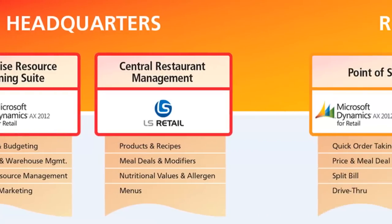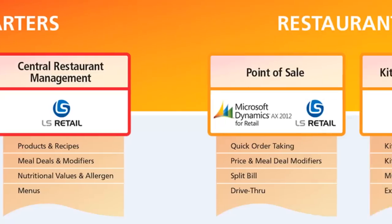The central restaurant management is being developed on top of the back office in AX. There you can set up your products, recipes, and meal deals with your modifiers — for example, a hamburger deal with a choice of side order and a drink, with the option to increase the size of the drink. You can use the standard functionality in AX to centrally distribute your set of products to different POSs at restaurants in different locations from headquarters.